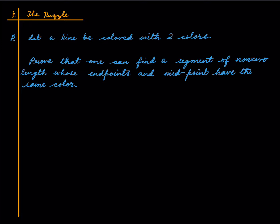Suppose we have a line and we have colored it with two colors, red and blue. Then one wants to prove that one can find a segment of non-zero length whose endpoints and the midpoint have the same color.